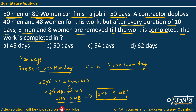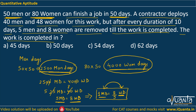We have equated the work of men and women. We can interpret this as: the work done by one man in one day is equal to 8/5, that is 1.6 times, the work done by one woman in one day. The total work can be taken as 2500 men days or 4000 women days. I will go forward with men days, and by a similar approach you can use the women days method as well.